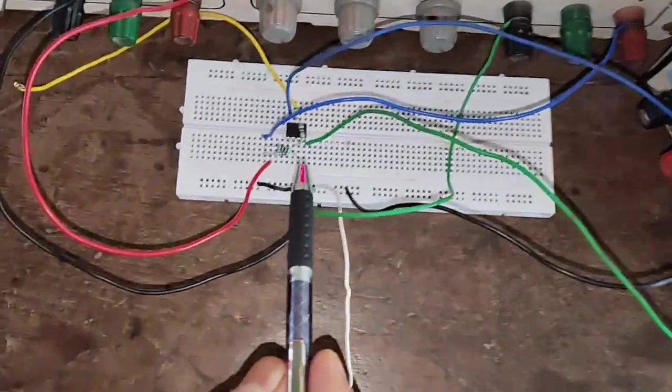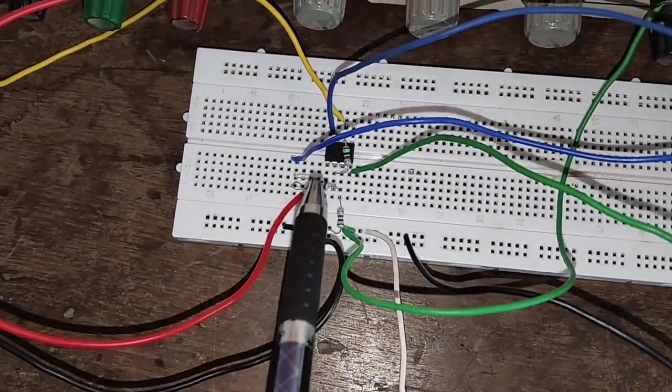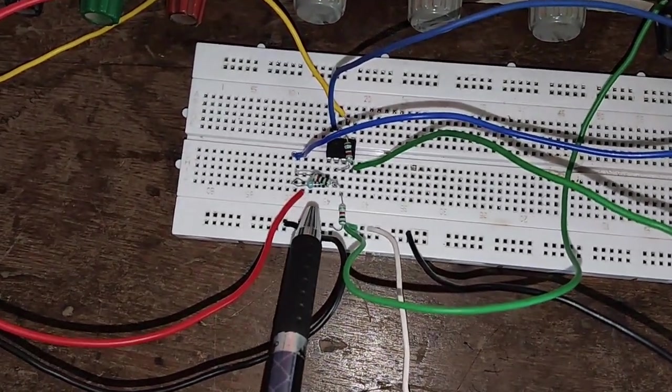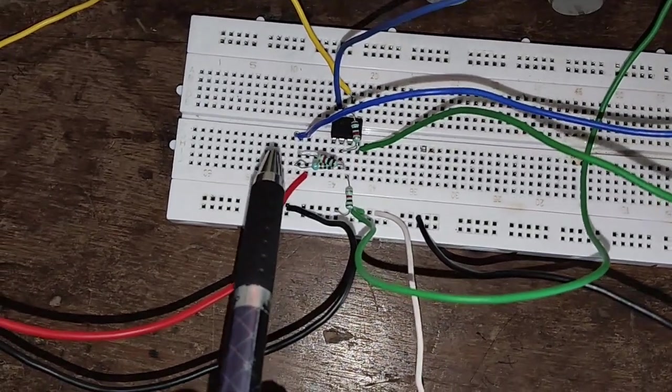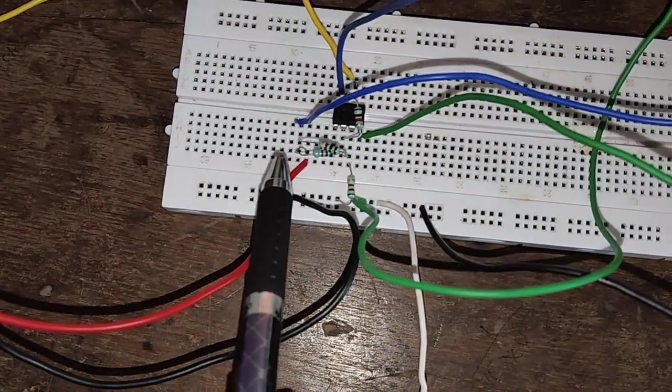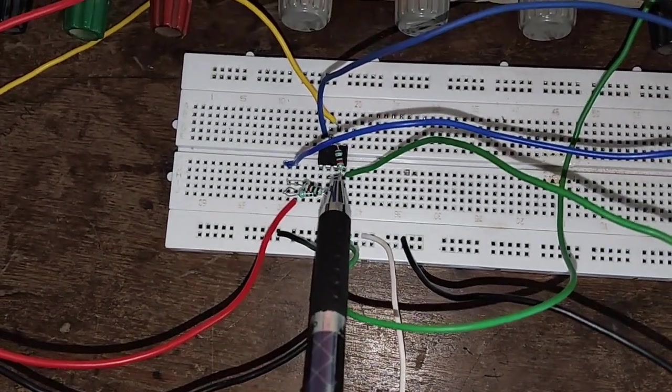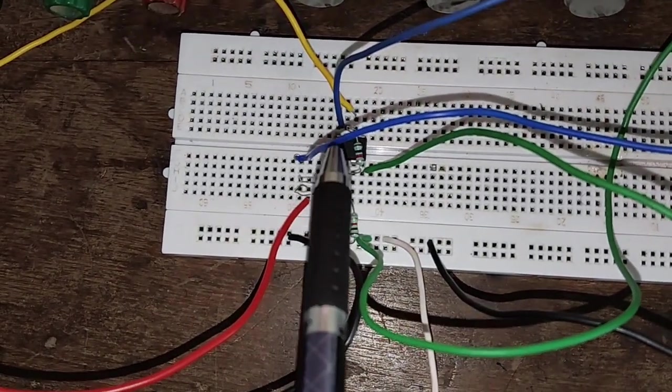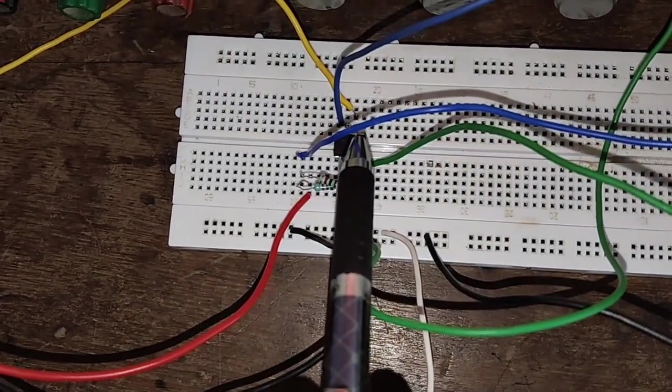On this breadboard, we can see that the op-amp IC741 is connected. Two resistors are connected at pin number 3 and one resistor is connected at pin number 1. At pin number 3 we are giving V2 and at pin number 1 we are applying V1. Between pin number 2 and 6, one more resistor is connected that is called feedback resistor.